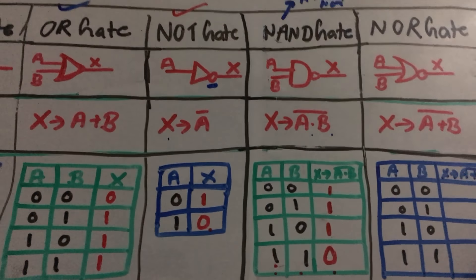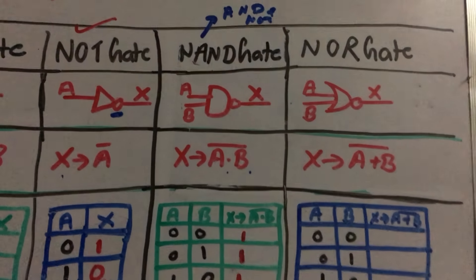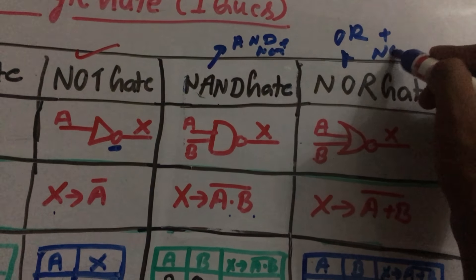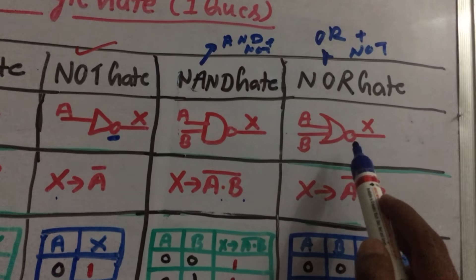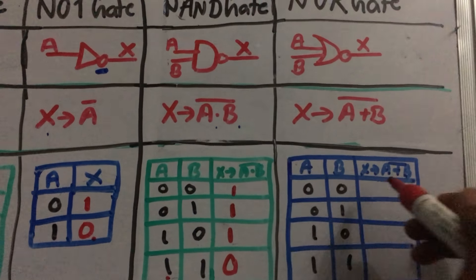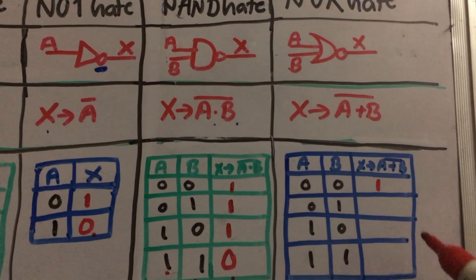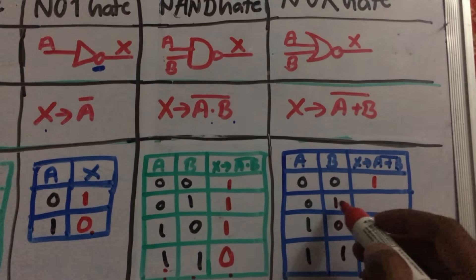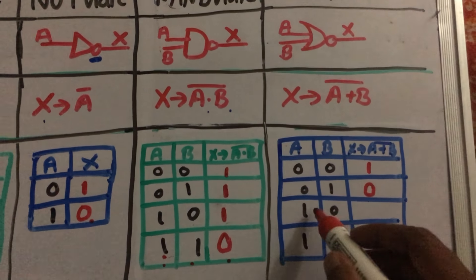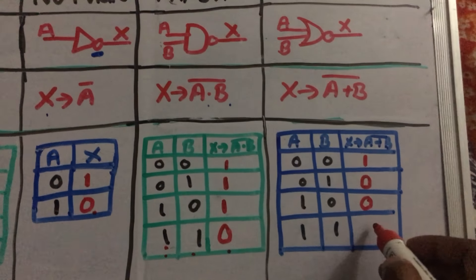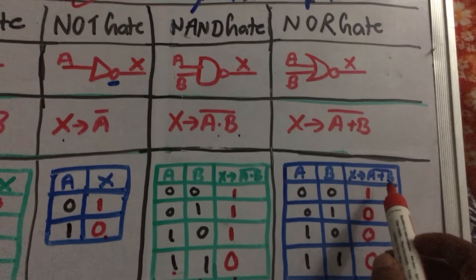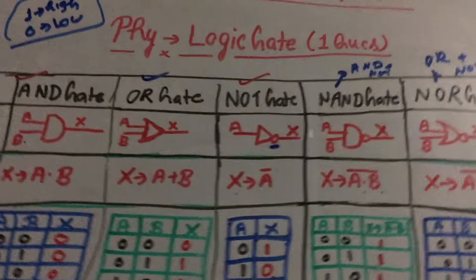The NOR gate is a combination of OR and NOT gates. Its formula is X = (A + B)‾. For the truth table: 0 + 0 = 0, complement is 1; 0 + 1 = 1, complement is 0; 1 + 0 = 1, complement is 0; 1 + 1 = 1, complement is 0. So in the NOR gate, if both inputs are low then the output is high. These are the five basic gates important for the exam.